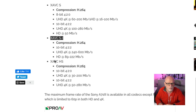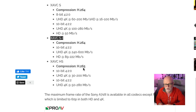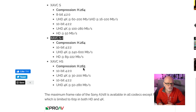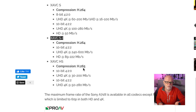The problem with the XAVC-HS down the bottom, which is the best codec available on this camera, is that it's an H265 codec — which is way too much for my computer to handle. I've got a Mac Pro and it's quite a beefy one, but it is the 2013 model. It just skips frames all the time, and Final Cut will warn you if it is skipping frames.